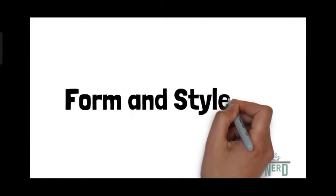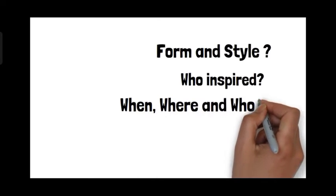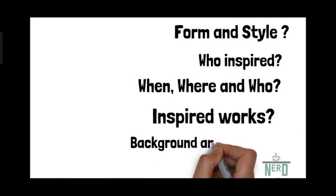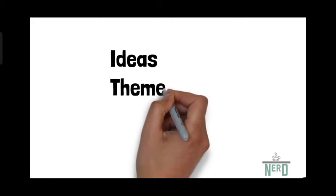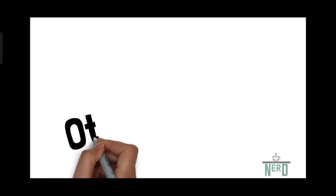You have to understand all aspects of the question and form more questions out of it. What form and style was the novel written in? Who inspired the novel and the novelist? When, where and who published it? What other works are inspired by this novel? Background and context of the novel. The correct order of ideas in the novel. Theme of the novel. Symbols in the novel. Famous quotes from the novel. What are the novels this novelist has written?